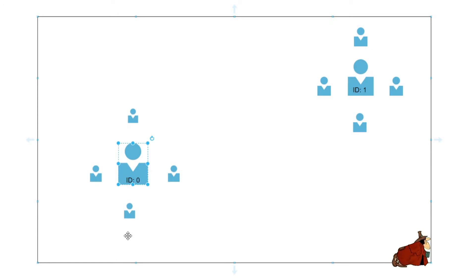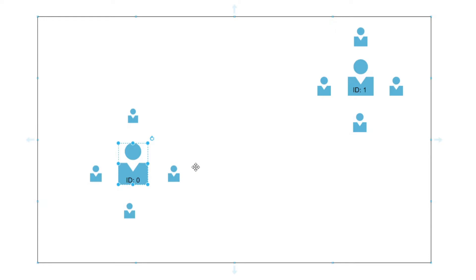The tracker keeps the same ID for a particular object, and the same goes for other persons or objects in the frame. When we start coding, we'll notice there are two parameters we can adjust. The first is max_disappeared, which means how many frames the tracker should wait for a particular object to disappear before losing that ID. For example, if the person moves out of the frame, the tracker waits a certain number of frames — if the person returns, it assigns the same ID; otherwise it loses that ID.